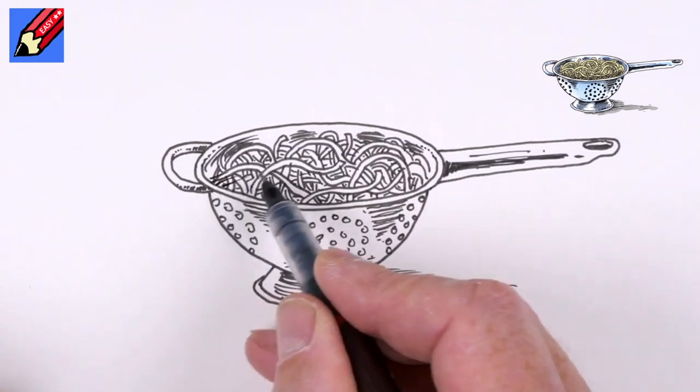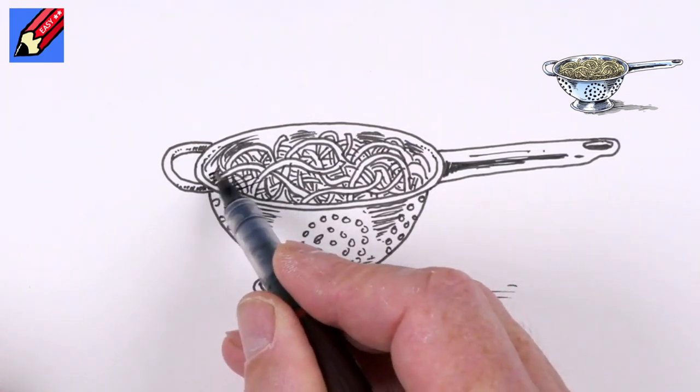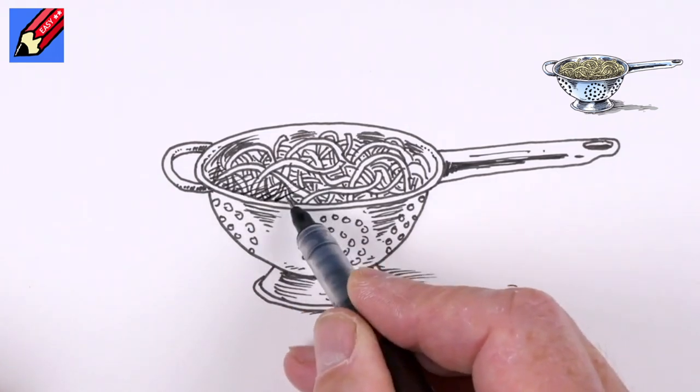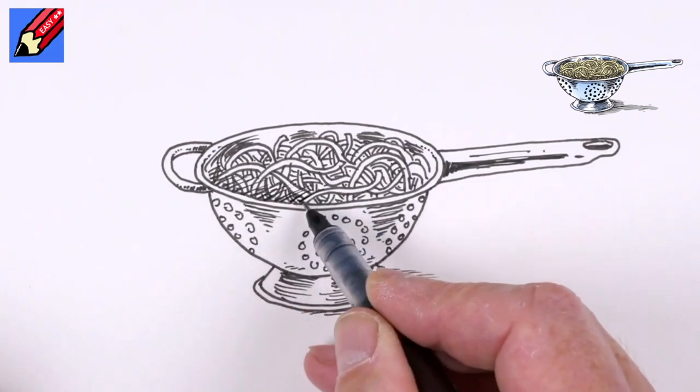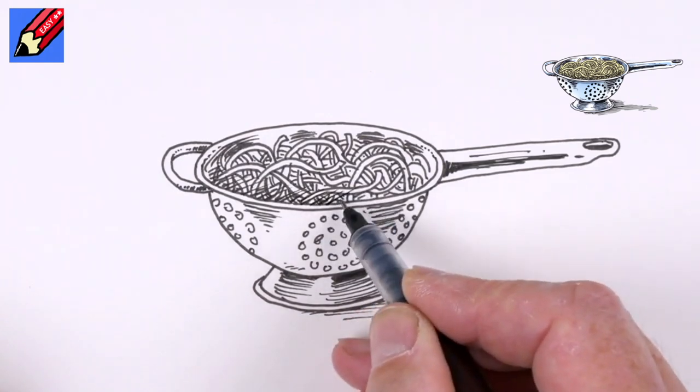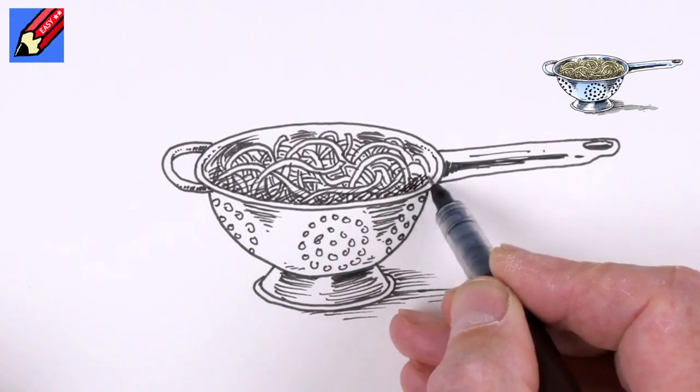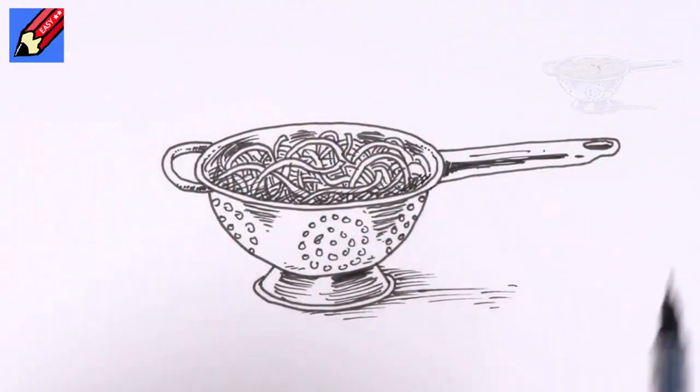So what I'm going to do is I'm going to add some shading. Here, just to kind of put it in the bowl as it were. So that kind of bit of shading there is just going to separate the pasta from the edge of the bowl. And place it further back. And there you go.